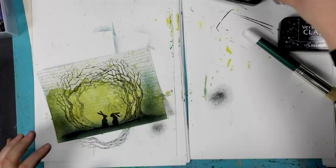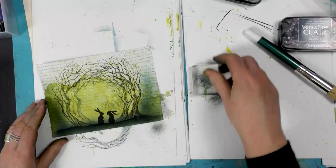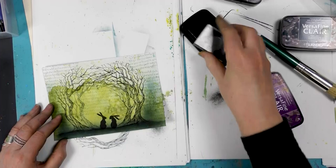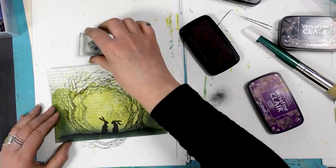We've got our little star stamp here as well. So this time I'm going to ink up in the monarch and I'm going to stamp off and then stamp over the top.